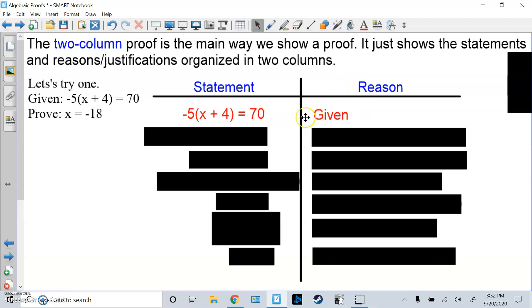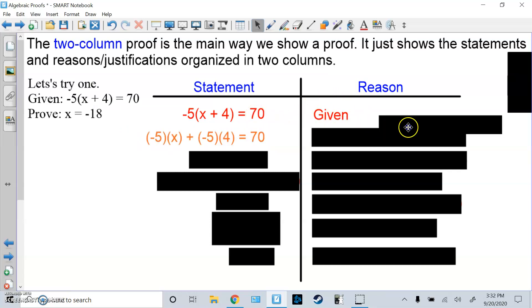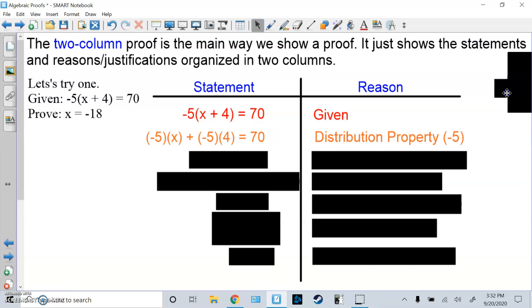From here, what would you do? Hopefully you know you'd distribute -5. So it would be -5 times X plus -5 times 4 equals 70. So that's called the distributive property of equality, and that's just -5. You do not put the same parentheses, but I like showing what I actually did.